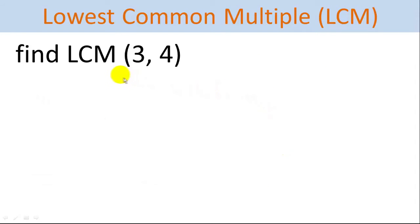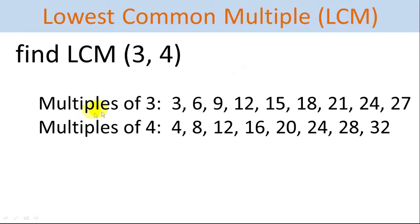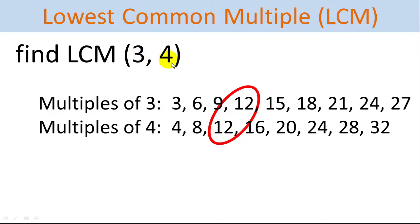Let's do a practice problem: find the lowest common multiple of 3 and 4. We could list out all the multiples of 3 and all the multiples of 4, then look through the list and find the smallest number that's in both lists — the lowest common multiple. In this case it's 12. It happens to be the product of 3 and 4. In some cases, the product of the two numbers may be the answer.